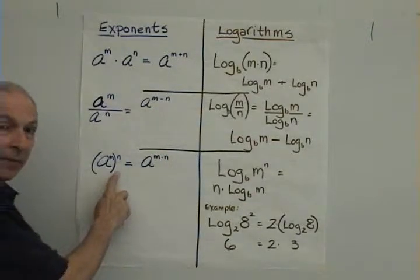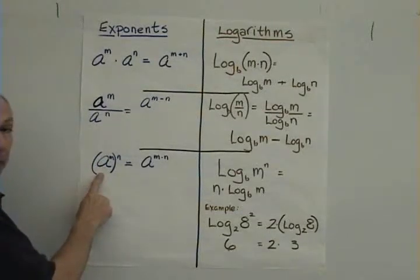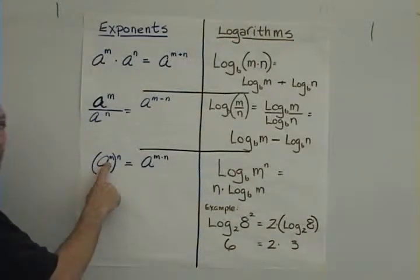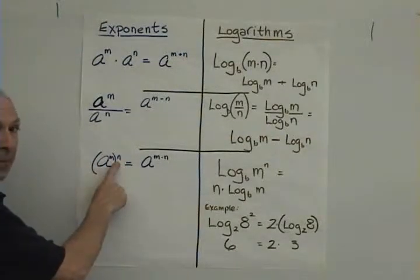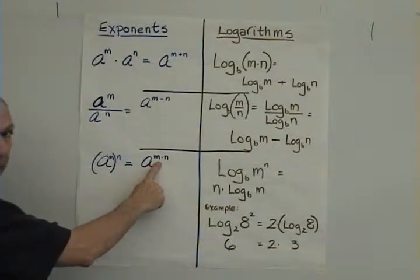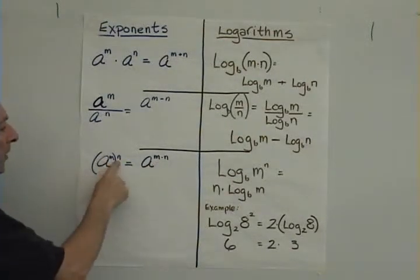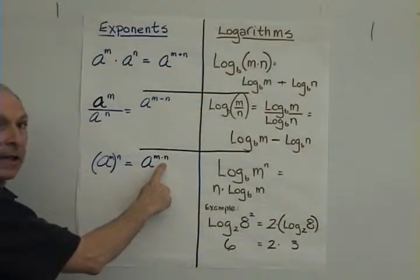Finally, and this seems to be a little bit confusing for some students, if we have an exponential number, a to the m power, and then that is all raised to the n power, then what we're actually doing is multiplying exponents. a to the m all to the n is the same as a to the m times n.